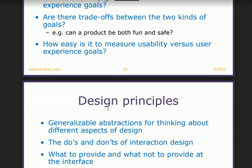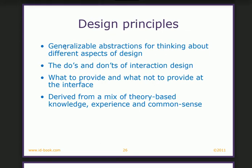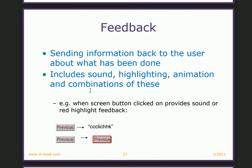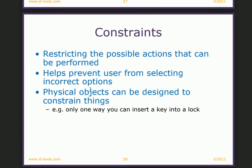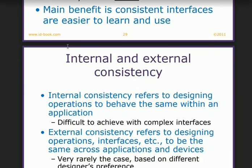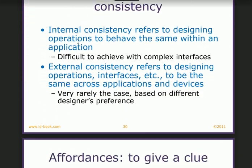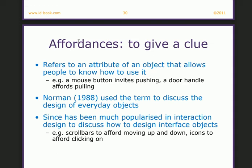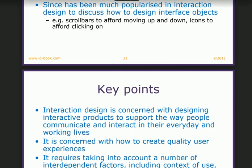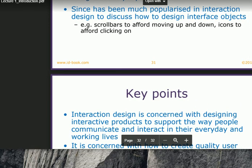We have usability and user experience goals — you can have a look at this. Then we have design principles and some points we should follow while designing anything. Then we have to get feedback on the design we have done. Then we have to follow some constraints, stay consistent, and consider internal and external consistency within the product. Then we have affordances — what does that mean? To give a clue. These are the points we have to follow.